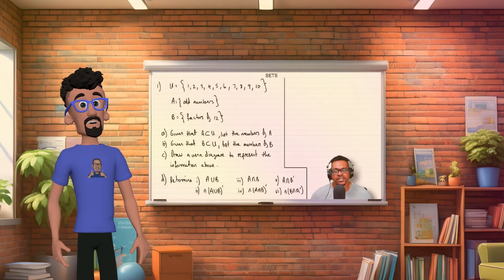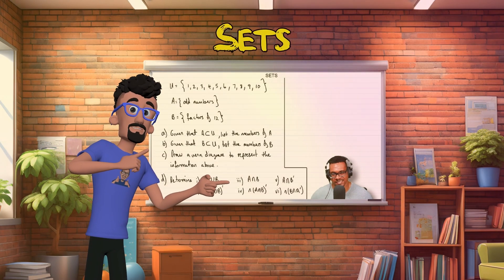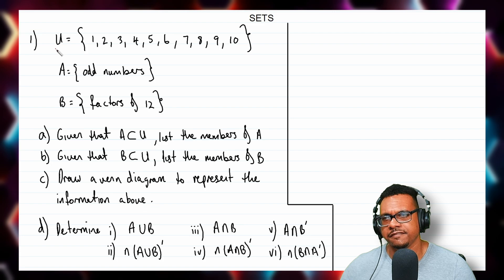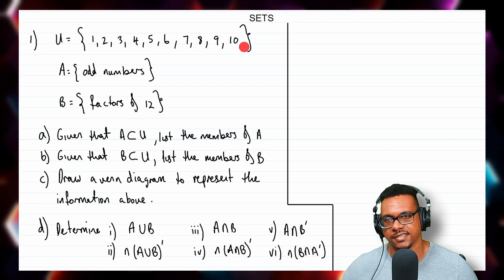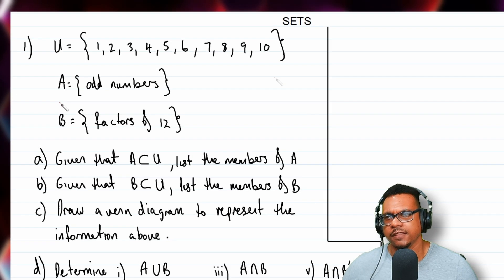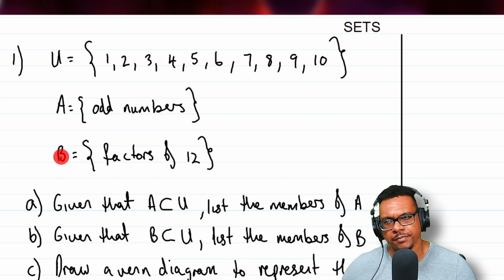In this video we're going to look at some questions based on sets. Here is the first question: we have the universal set as numbers from 1 to 10, set A with odd numbers, and set B with factors of 12.